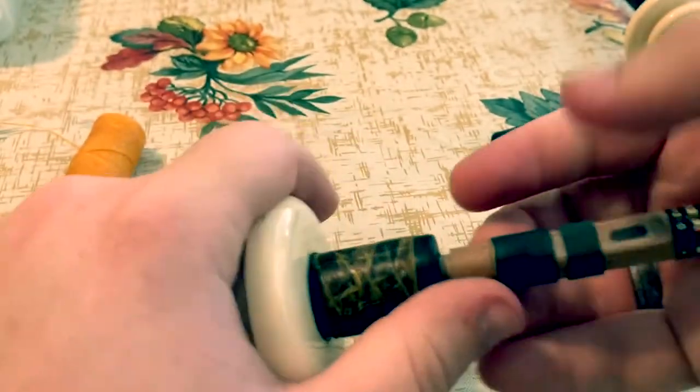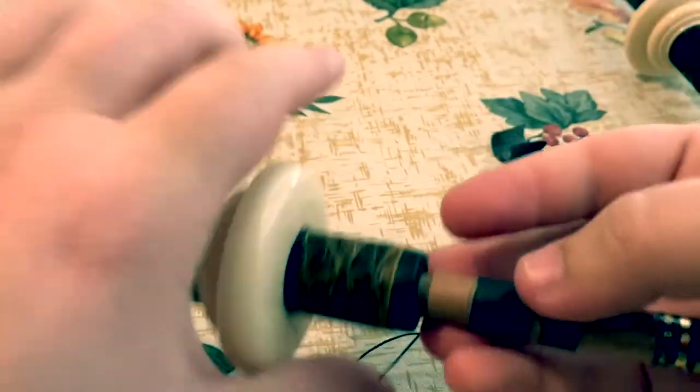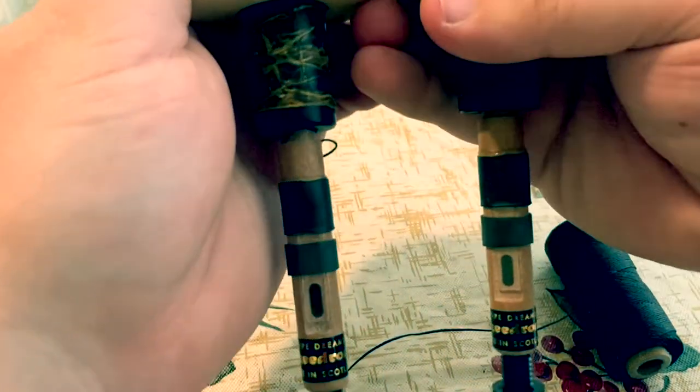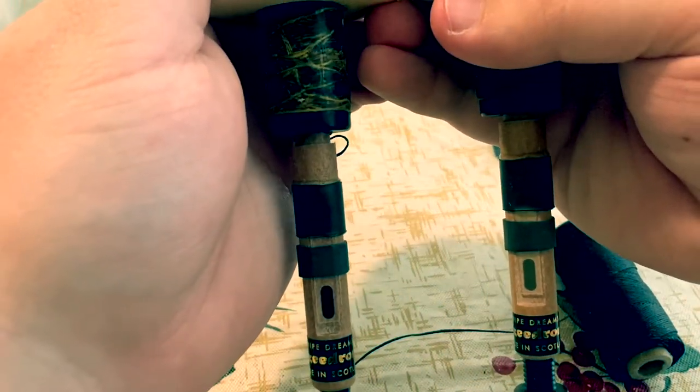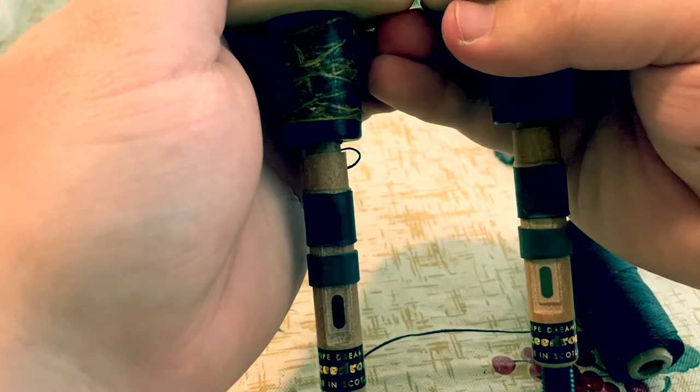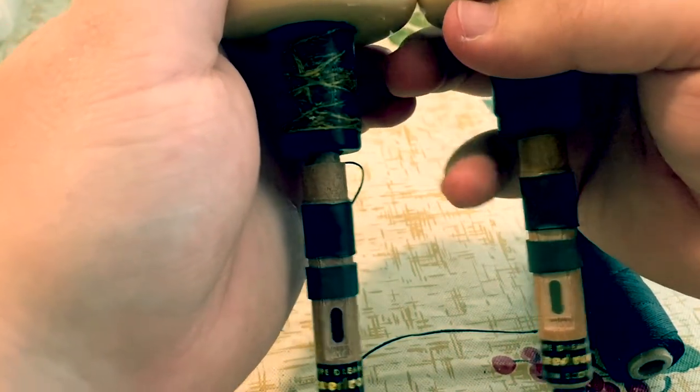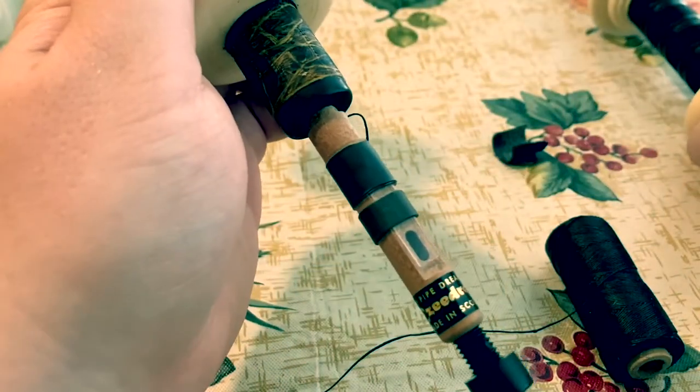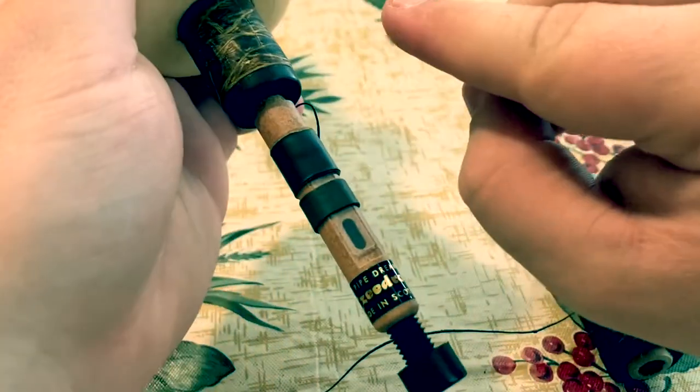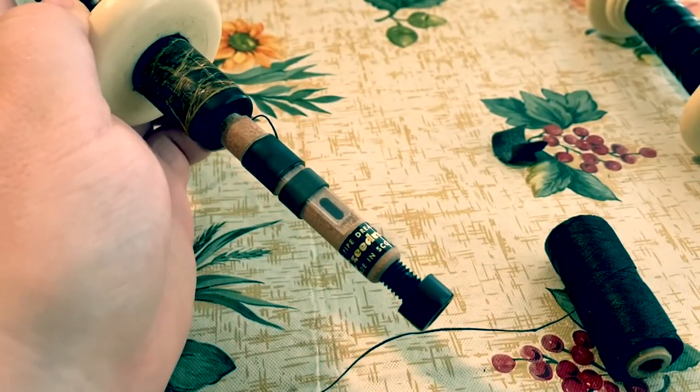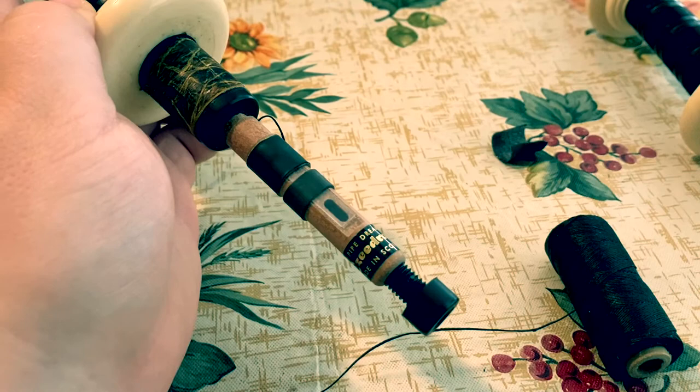So, the final thing to keep in mind, more for tenor drones than for anything else, is when we are setting up a new set of tenor drones, we want them to be seated the same distance. As you can tell, this black one is nowhere near as deep as this outer one. So I'm going to take a tiny bit of hemp off and seat it deeper. But otherwise, that is the best way that I've found to seat a set of drone reeds in your drones.